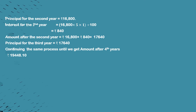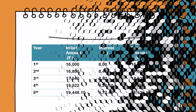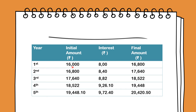To summarize the table: First year — initial amount 16,800, final amount 16,800. Second year — initial amount 16,800, interest 840, final amount 17,640. Third year — initial amount 17,640, interest 882, final amount 18,520. Fourth year — initial amount 18,522, interest 926.10, final amount 19,448.